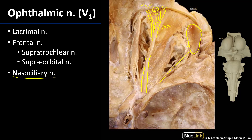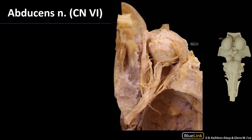The nasociliary nerve is deeper and cannot be seen without removing the levator palpebrae superioris and superior rectus muscles. The abducens, cranial nerve 6, goes out to the lateral rectus muscle and travels through the cavernous sinus on its way there. The lateral rectus muscle abducts the eye — the abducens nerve abducts gaze by innervating the lateral rectus. We can see the abducens on the brainstem model.